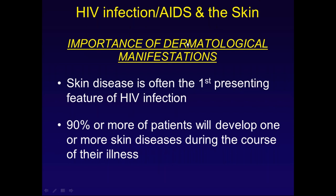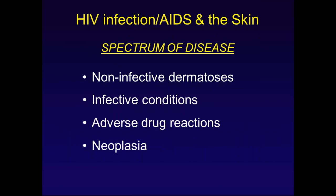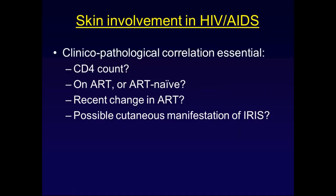Why is it important to be aware of the dermatological manifestations of HIV AIDS? The skin disease is often the first presentation of HIV infection — often undiagnosed HIV infection. Nine out of ten patients will develop skin disease during the course of their illness. The broad categories include non-infective dermatoses, infectious conditions, adverse drug reactions including antiretroviral therapy, and neoplasia. I want to focus on problem areas and the lessons I've learned, rather than go through each category in a didactic manner.